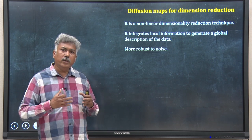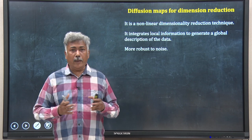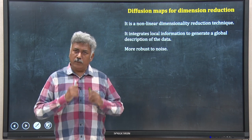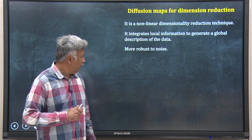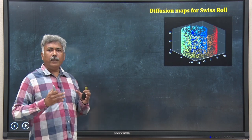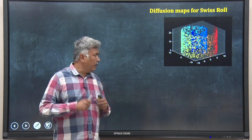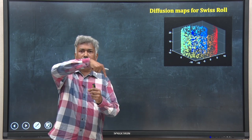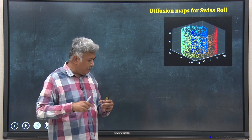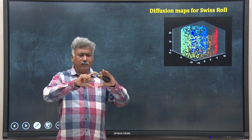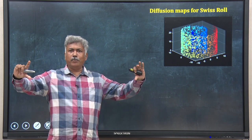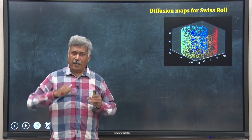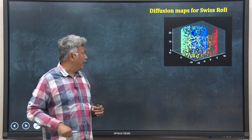Before I go into a detailed discussion of diffusion maps and how it works, let me give you one example. This is a typical Swiss roll data — very famous. You can easily see we have a Swiss roll-like structure of the data. You can imagine the original dataset is a strip that has been rolled into a Swiss roll shape, a concentric circle type structure.